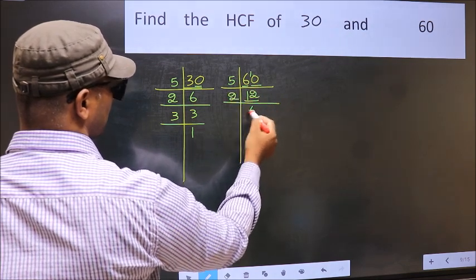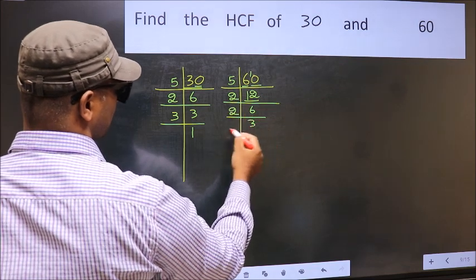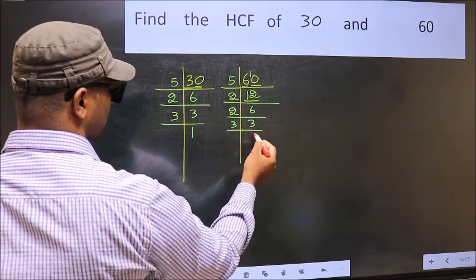Now 12 is 2, 6, 12. 6 is 2, 3, 6. 3 is a prime number, so 3, 1 is 3.